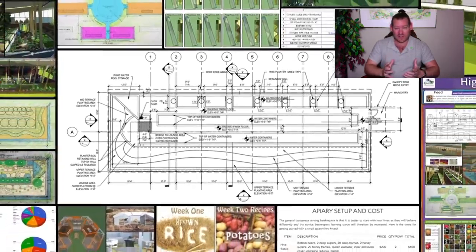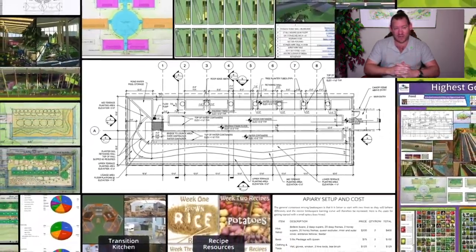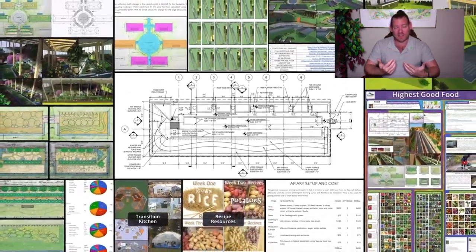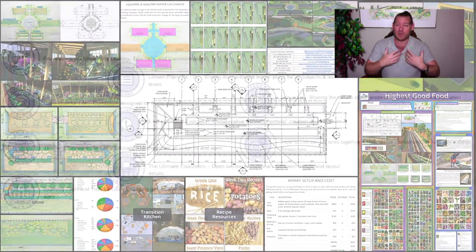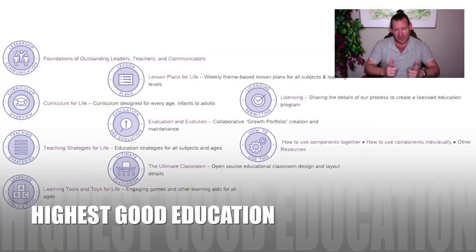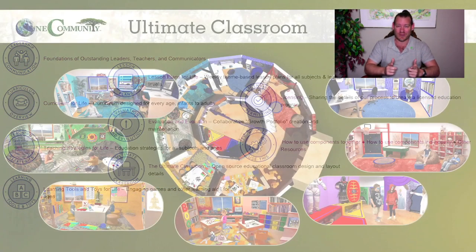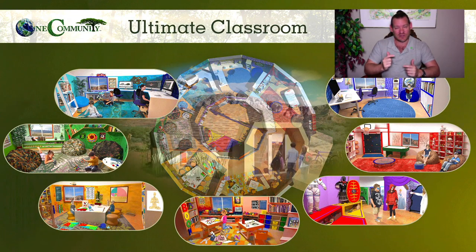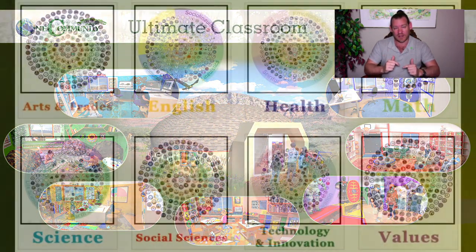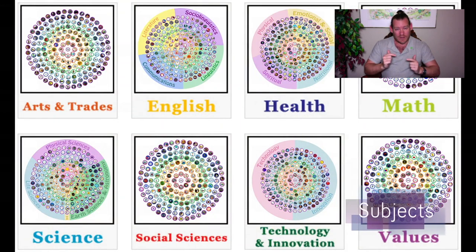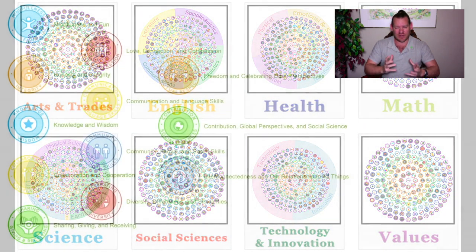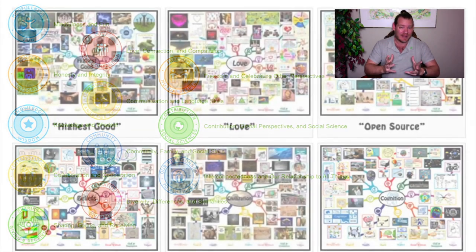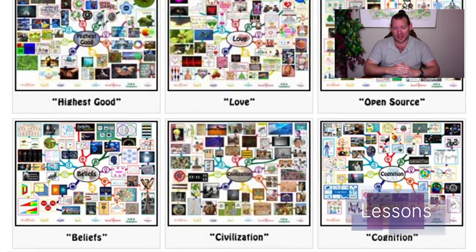We've had over 400 volunteers contribute to our project now, in the over a decade that we've been doing this. I'm a volunteer, everybody in our team is a volunteer. We're a nonprofit organization, a non-governmental organization, and we're creating this because we want to see a world that works for everybody within our lifetime. I want my children and my grandchildren to grow up in a different world — one that's way, way better and really meeting the needs of all people everywhere. And we have the ability to do that through self-replicating teacher demonstration hubs.